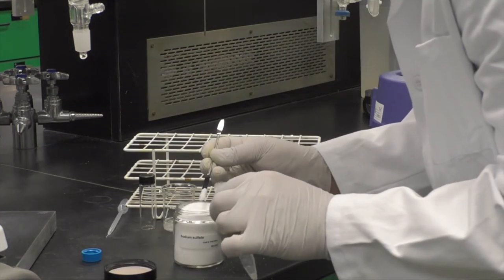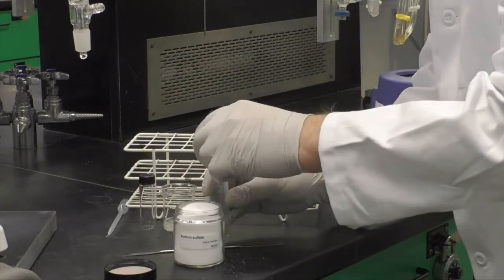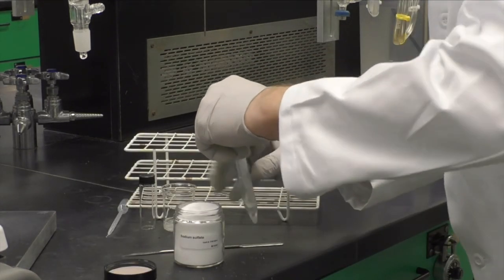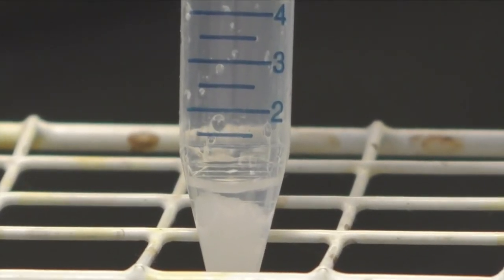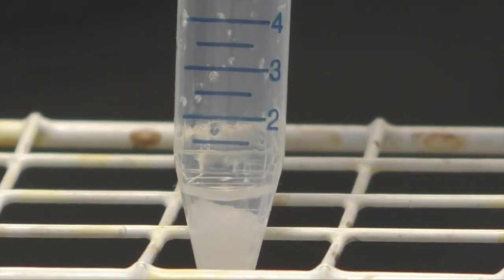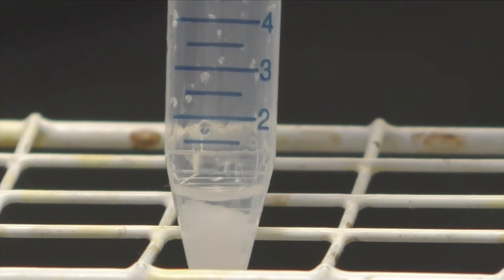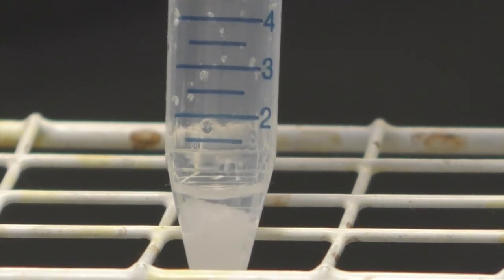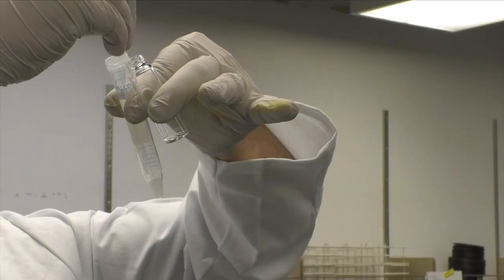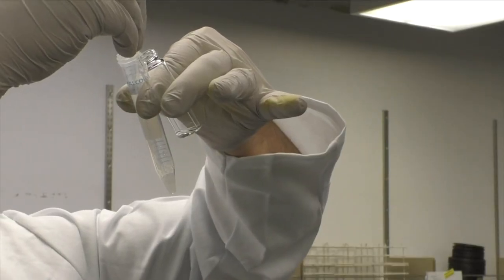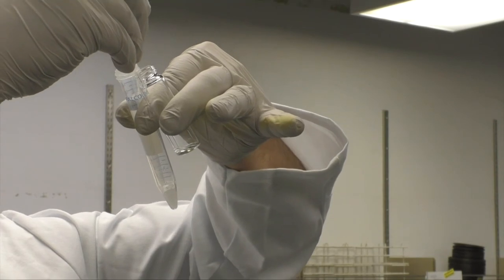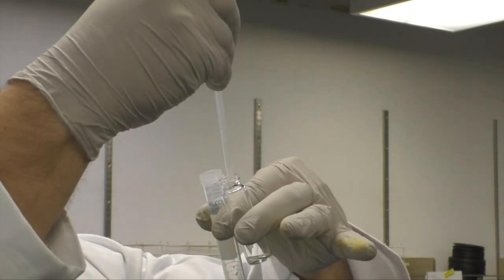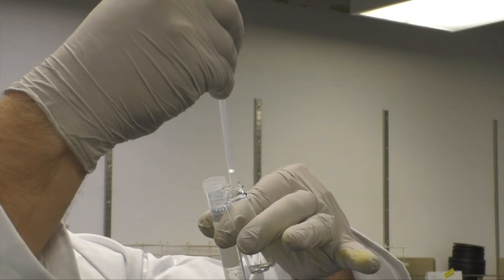To dry your product, add a micro spatula tip full of sodium sulfate to your centrifuge tube and give it a good shake. Continue to add the sodium sulfate a little at a time until the solid is obviously white and you can clearly see some granules at the top. Last, using a plastic transfer pipette, transfer the liquid, trying your best not to get any of the sodium sulfate, into a pre-weighed 4-dram vial.